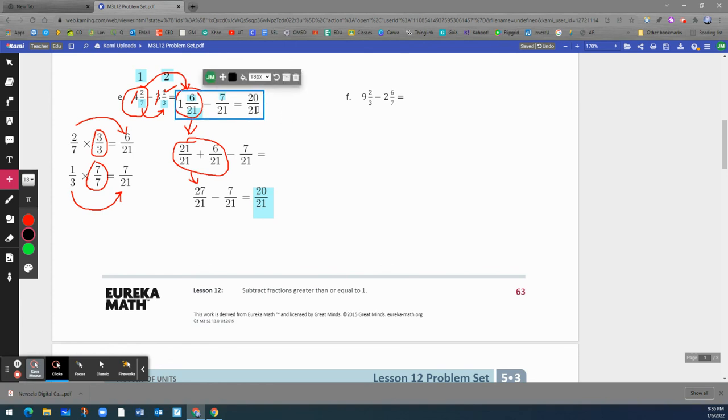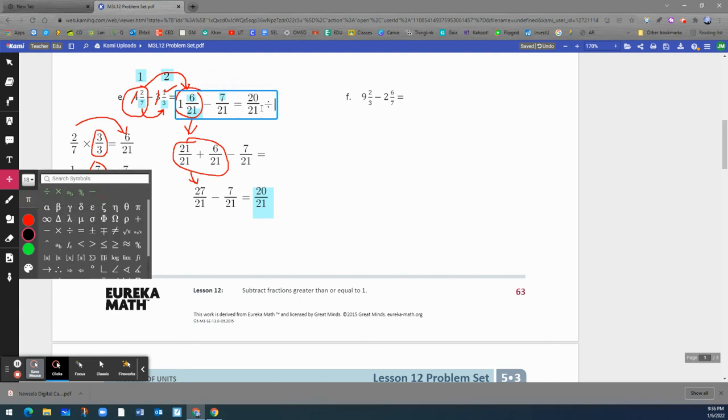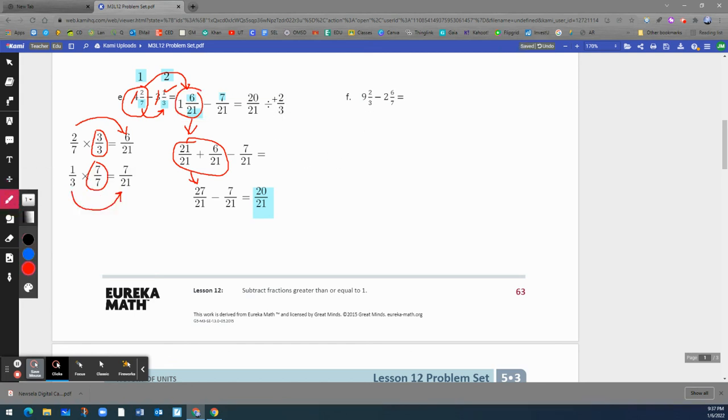And these two, we cannot simplify these numbers because 20 can be divided by 2, but 21 cannot be divided by 2. Let me show you what I mean. To simplify, we have to divide both numbers by the same number. The 20 can be divided by 2, and the 21 can be divided by 3. This is not possible. This will change this whole fraction.